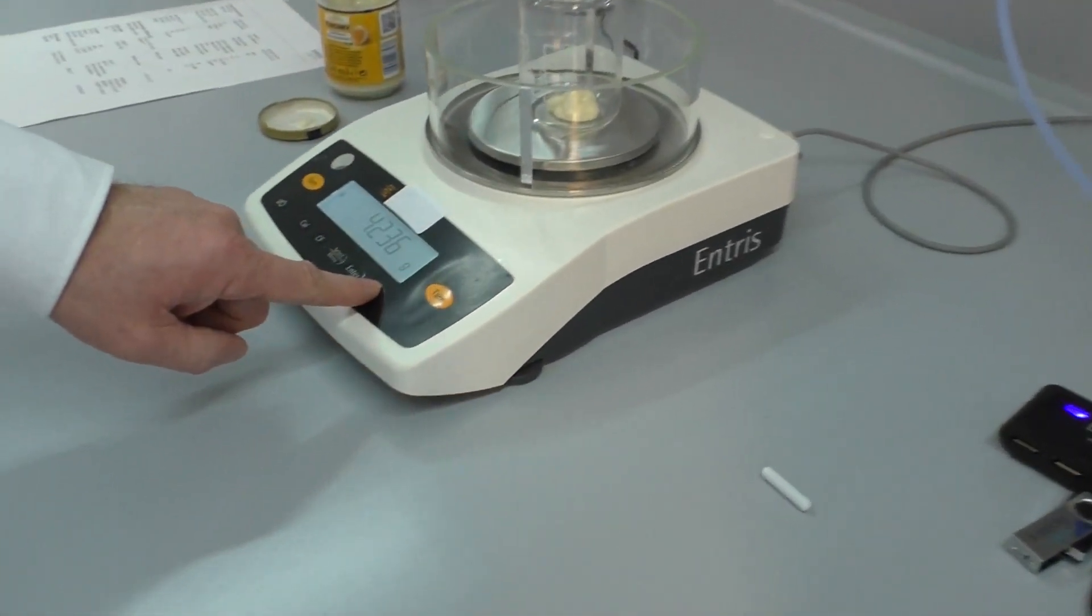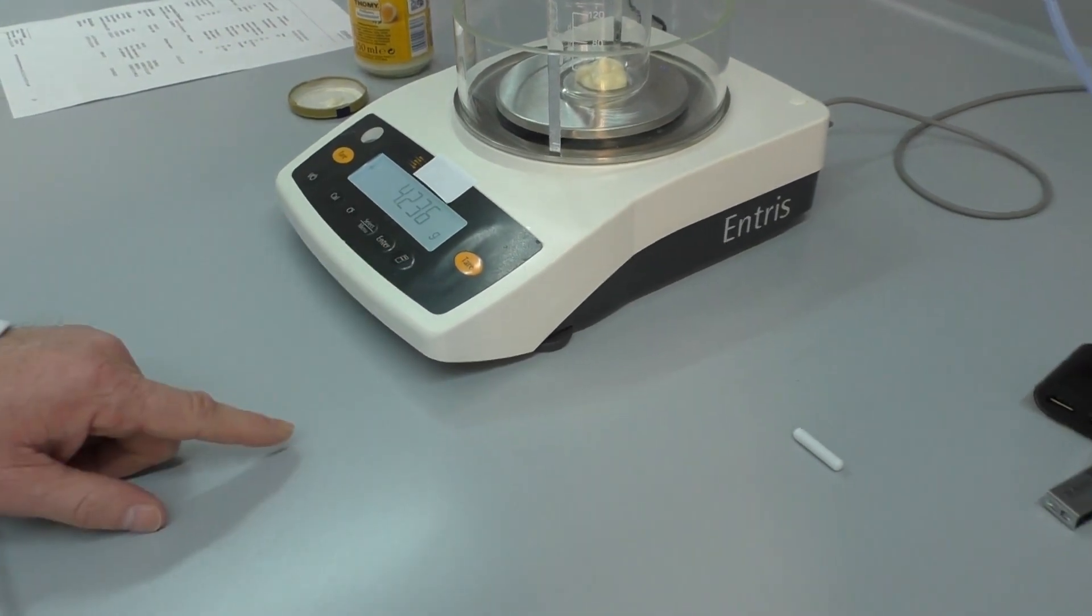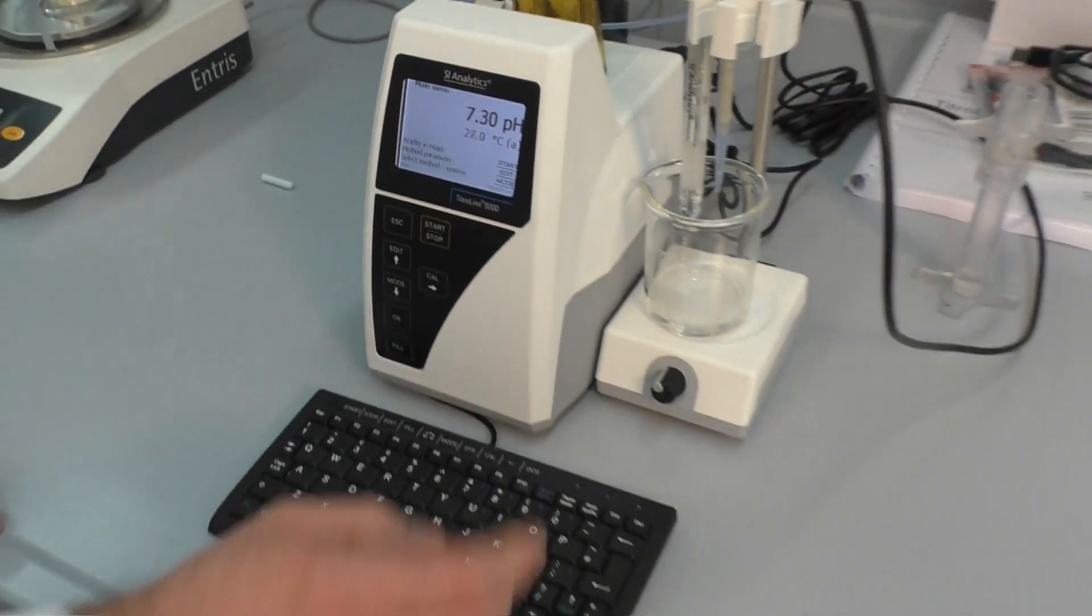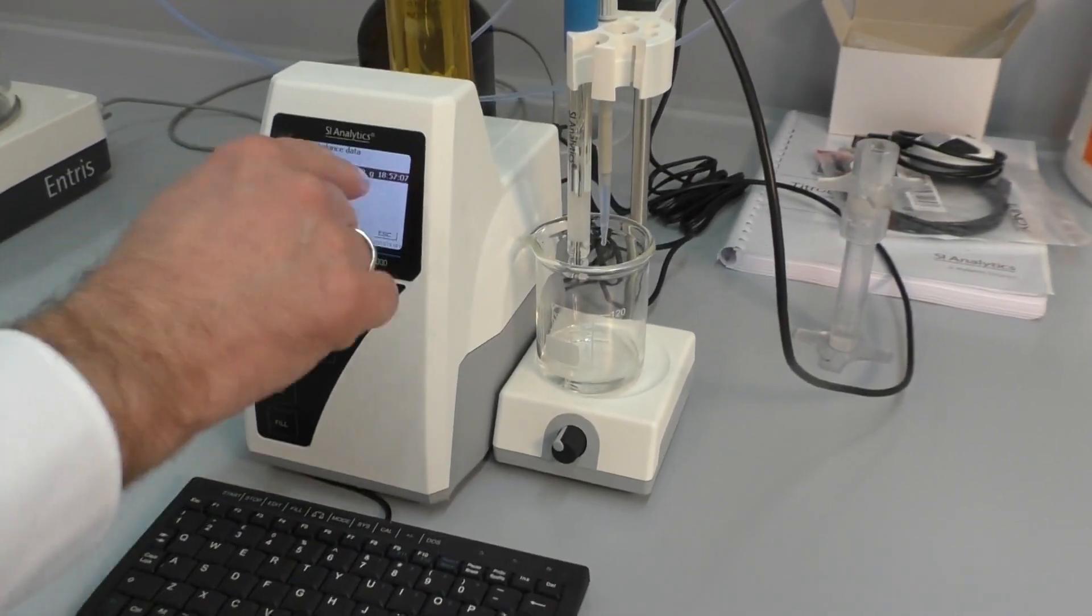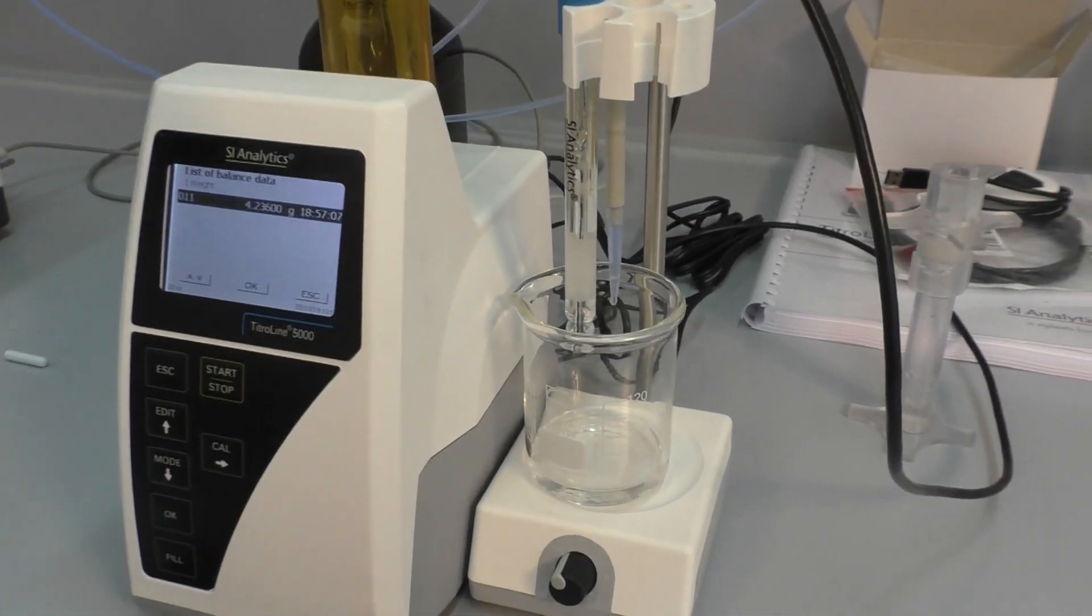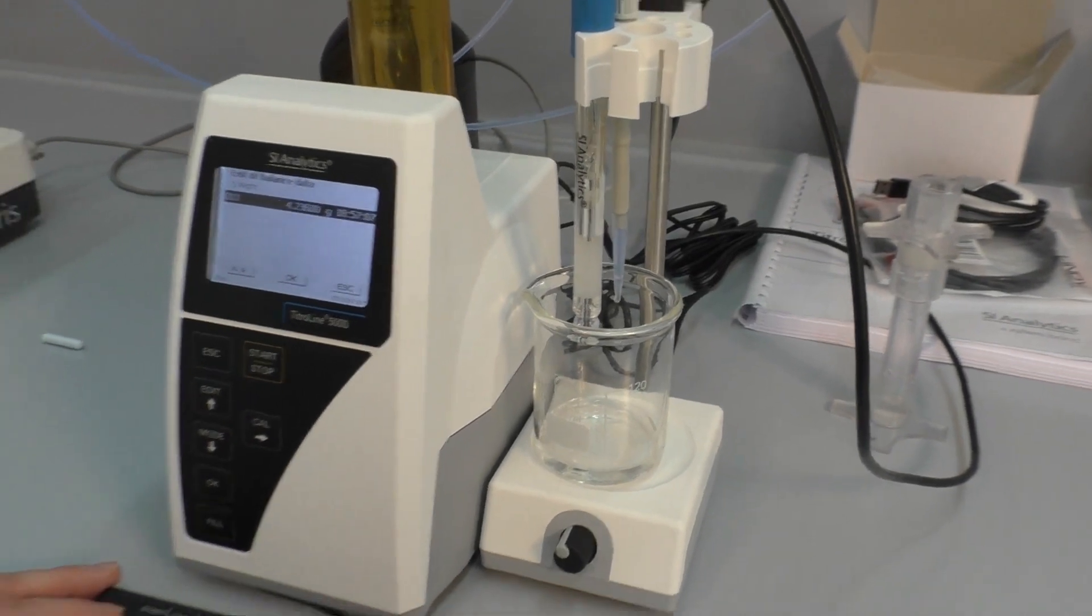If you press now the print button, you hear a beep. When you're using an external keyboard and press F5, you can see the sample weight. The weight was automatically transferred to the Titration Line 5000.